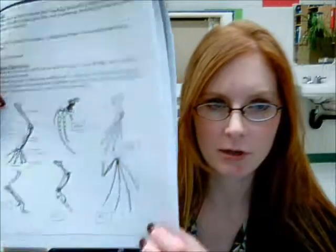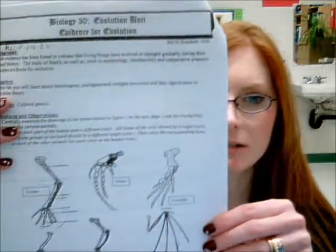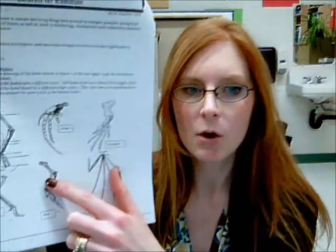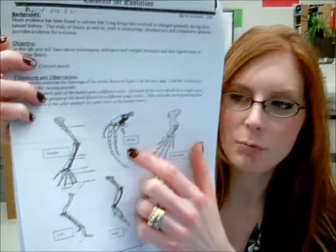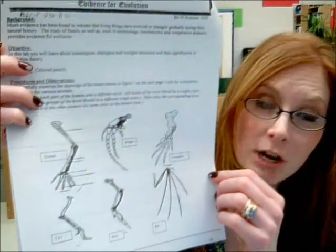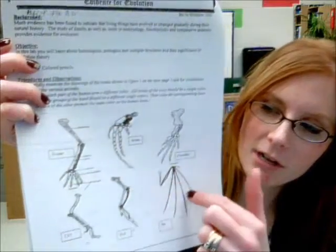In your evolution unit handout, flip to page 14 — the page that looks like this. What you're going to want to do is go through and work on homologous, analogous, and vestigial features. It says you should be colouring in the information, but you don't need to colour them in. What I'd like you to do is take a look at how they're shaded and compare things that are shaded similarly between the different items there.